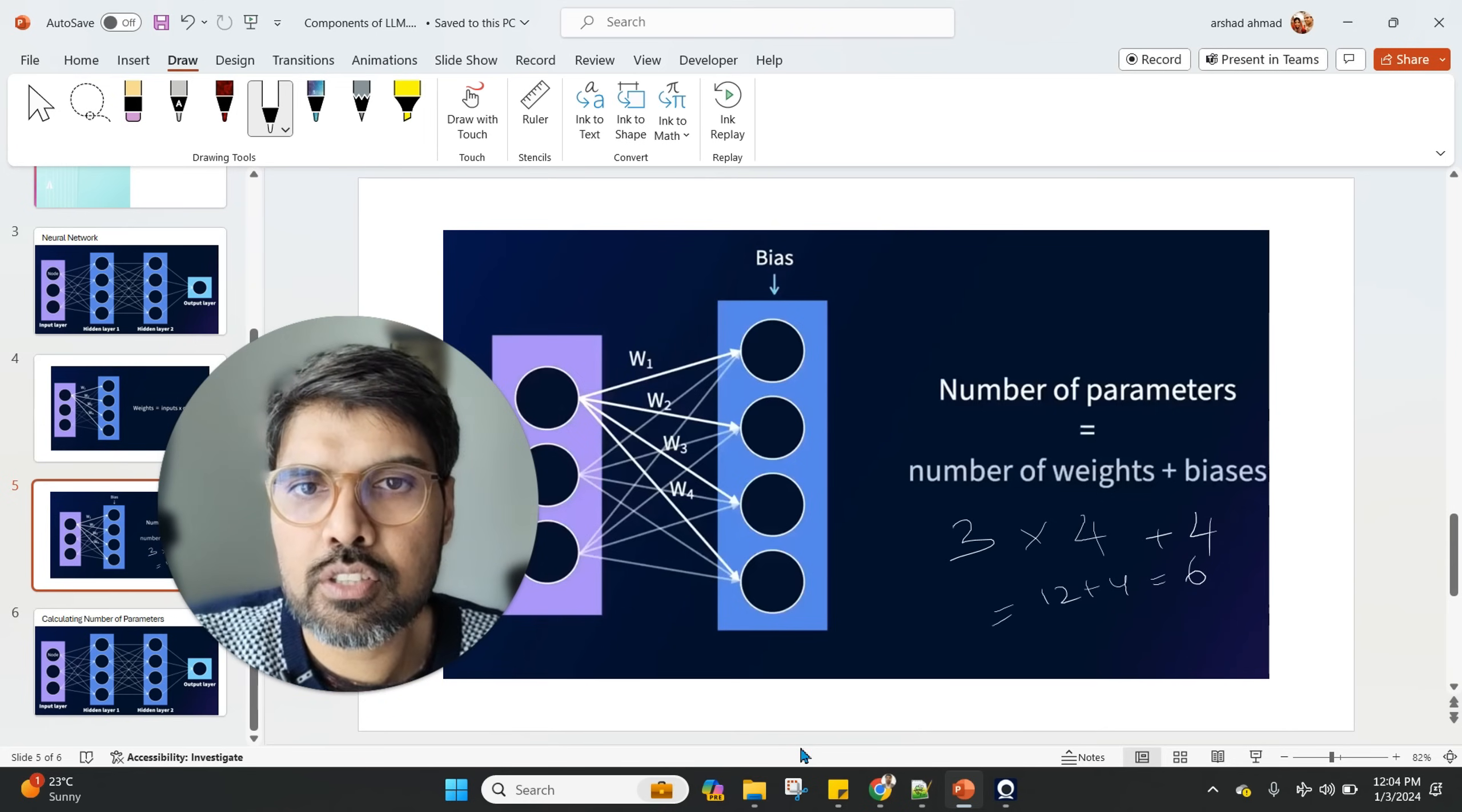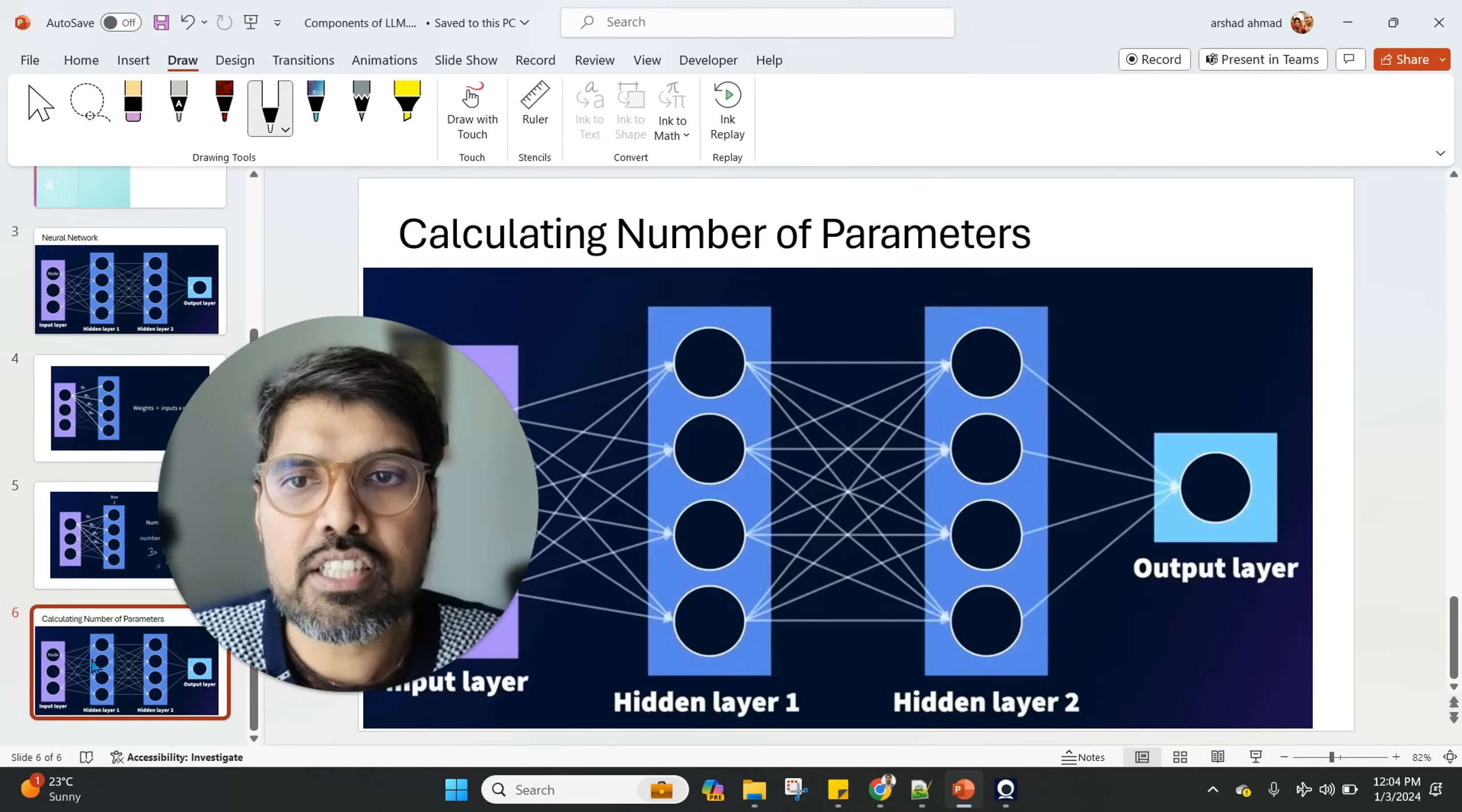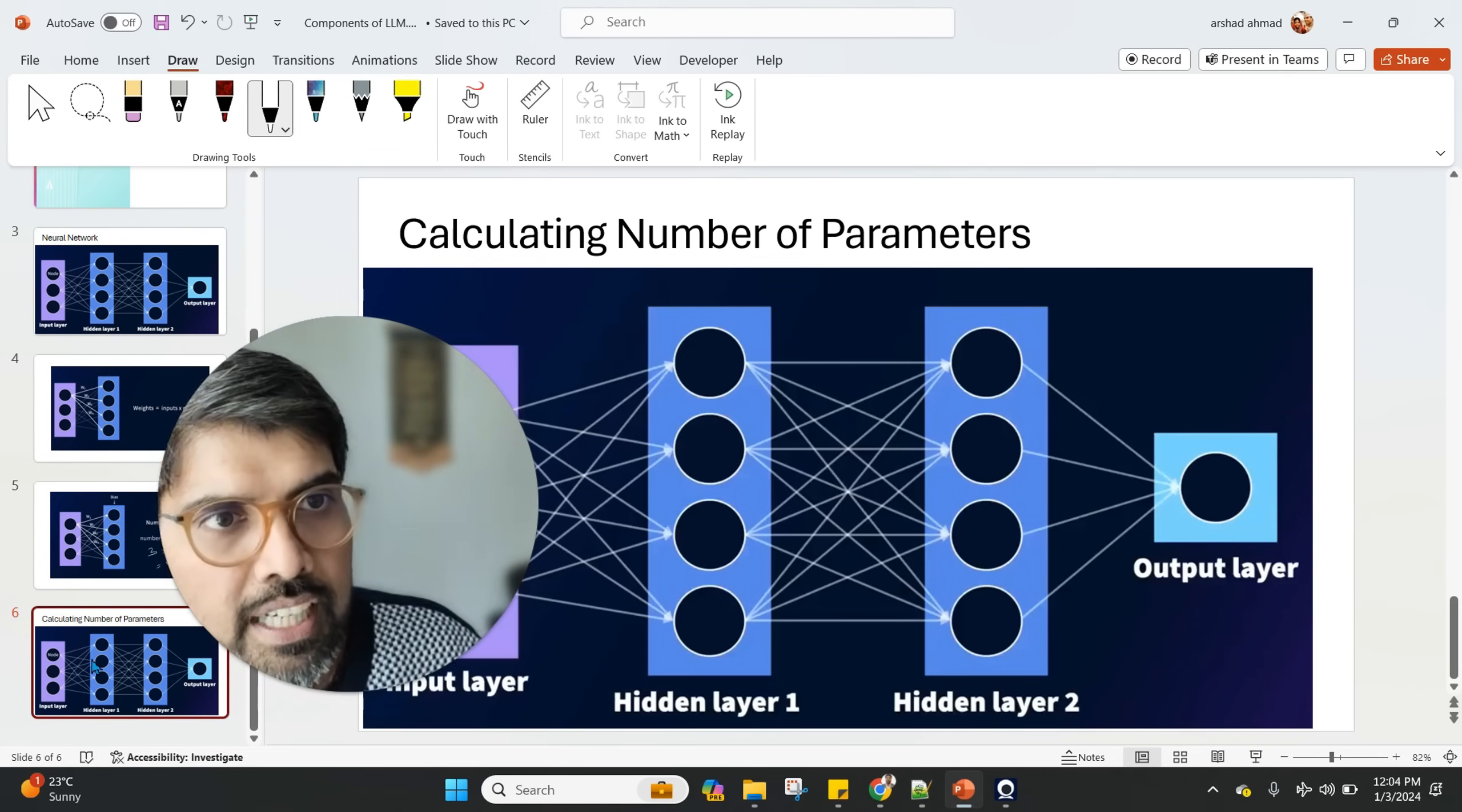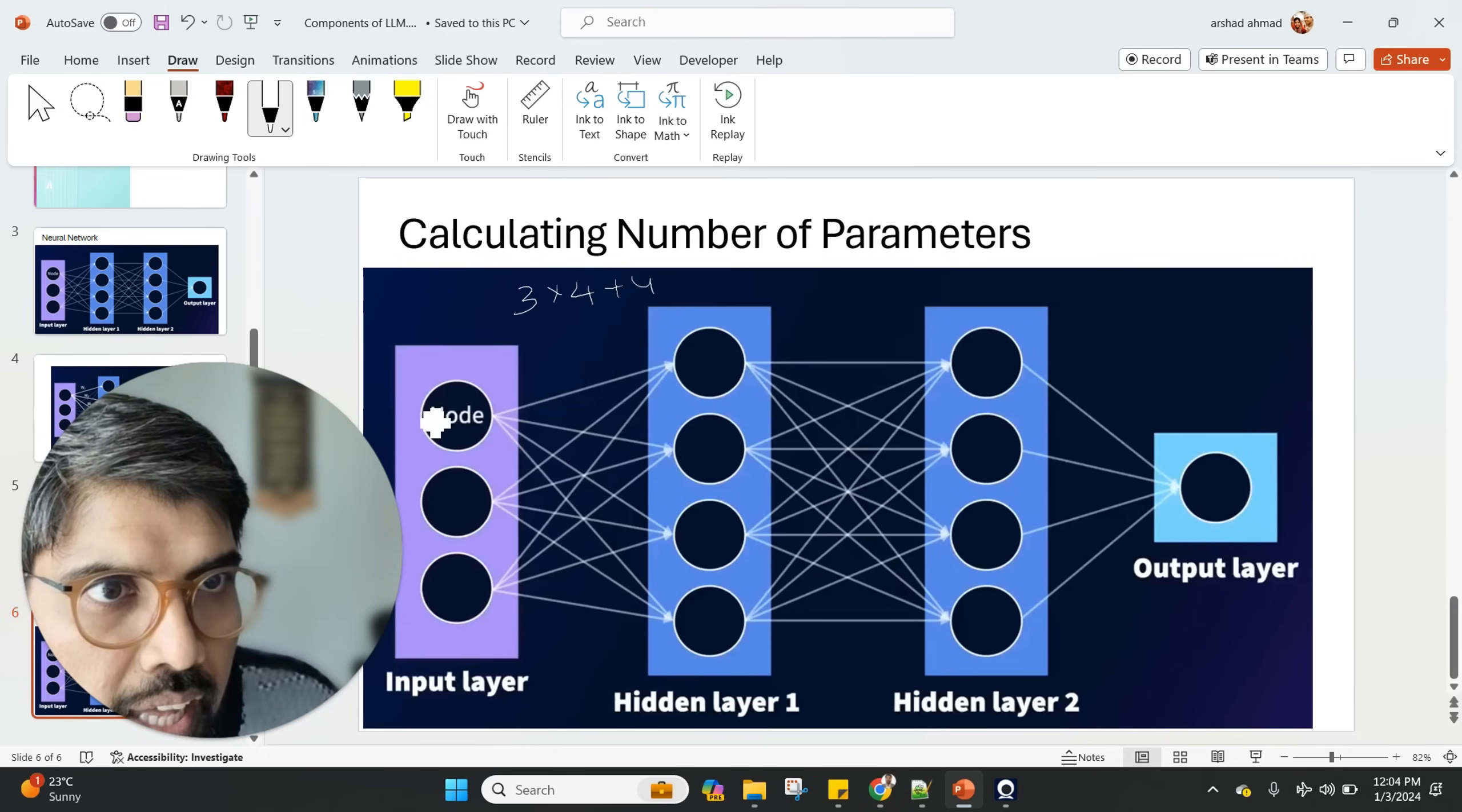For this diagram, the total in this particular scenario, you can see the number of parameters is 3 times 4 plus 4, which is a total of 16. We apply the exact same logic to the next part of the network, which is the middle section. We have 4 nodes on the left and 4 on the right, and this means we're going to do the calculation and get the whole node here as well.